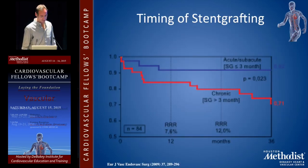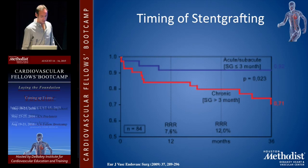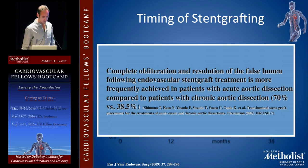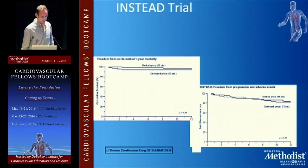As for the timing of stent grafting, if you do it acutely, patients seem to do a lot better. In one study, at less than or equal to three months, patients performed significantly better than in chronic situations, with complete obliteration and resolution of the false lumen following endovascular stent graft treatment at 70% versus 38.5% in later periods.